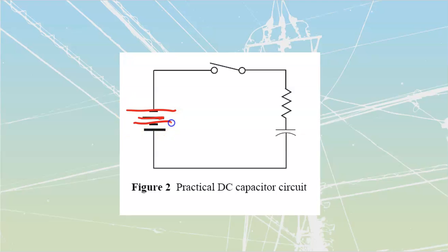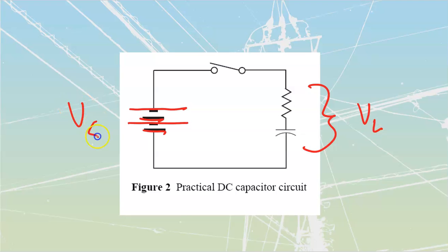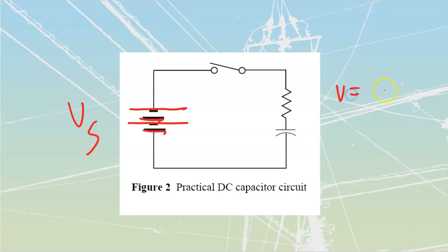Now we have two components as the load and one source. We have to satisfy Kirchhoff's law of voltage — the sum of all voltage drops across our loads has to equal the source voltage. When the switch is open, there's no current flowing. Therefore V = IR, and with zero current there are zero volts dropped across the resistor. With no current delivered to the capacitor, V = Q/C means Q is also zero.